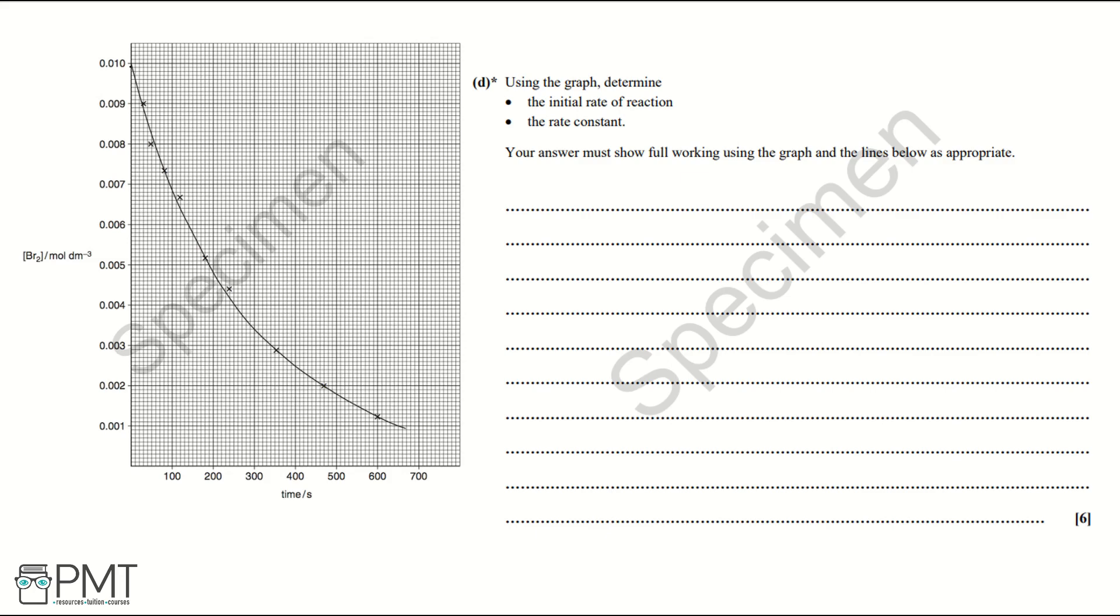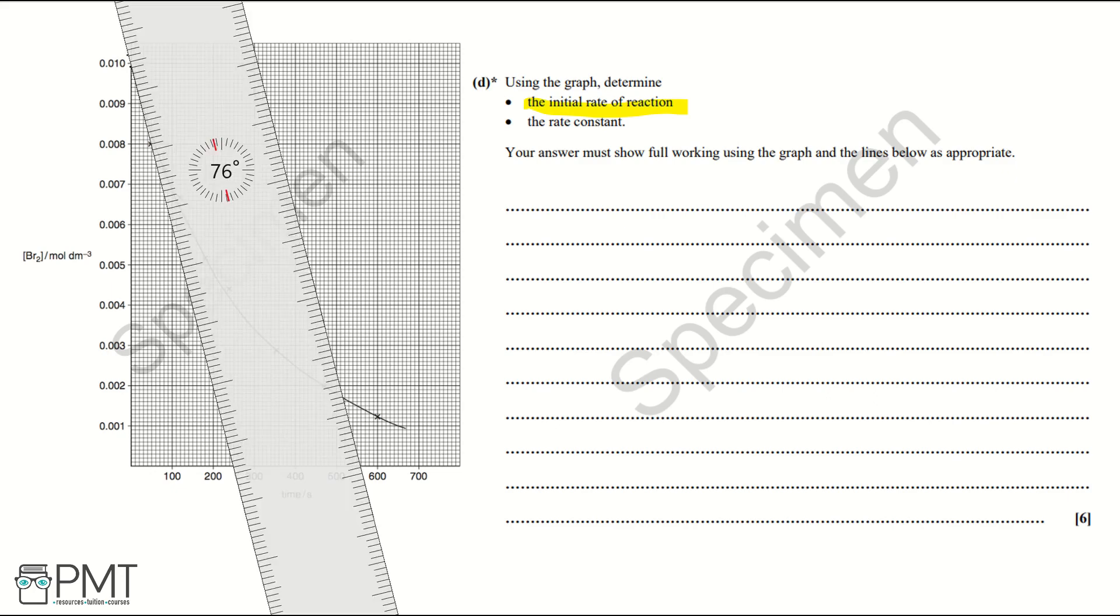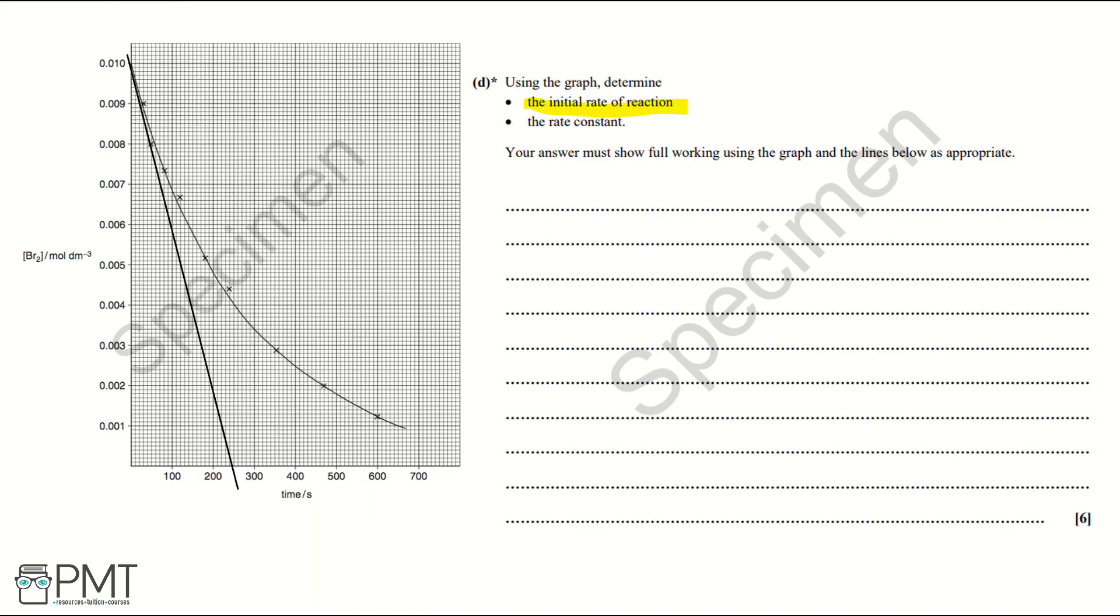First we're going to work out initial rate of reaction. We do this plotting a tangent at t equals zero. So using a ruler to plot the tangent at t equals zero, we then need to pick two points and work out the gradient of this tangent. So if we use the point 0.01 and follow it through, it's landing on 220. Then picking the point where it lands at 100 on the x-axis or the time, we follow it up and we've got 0.0058.